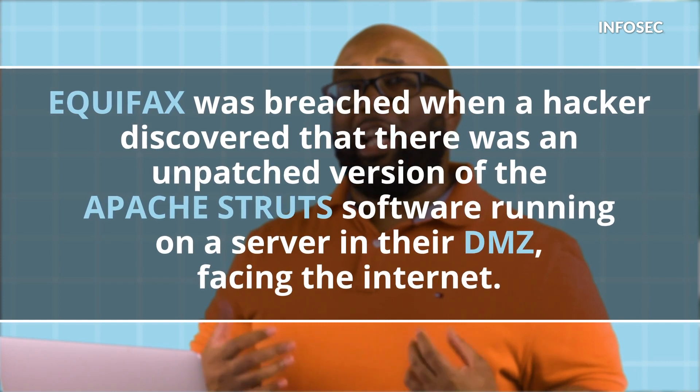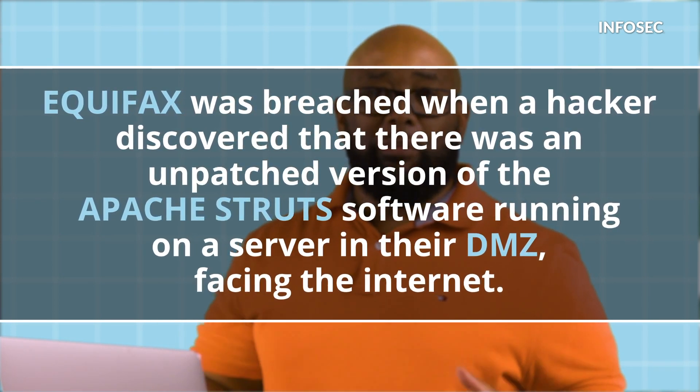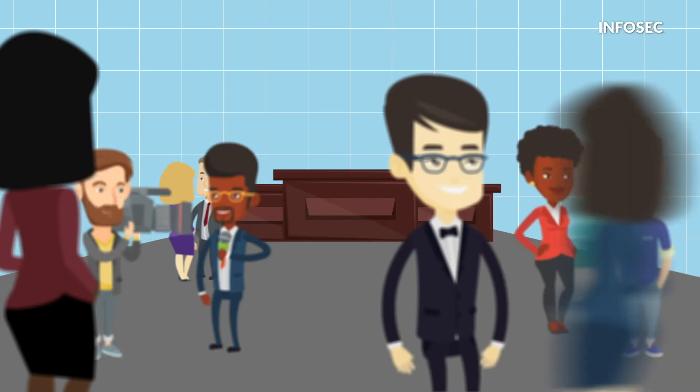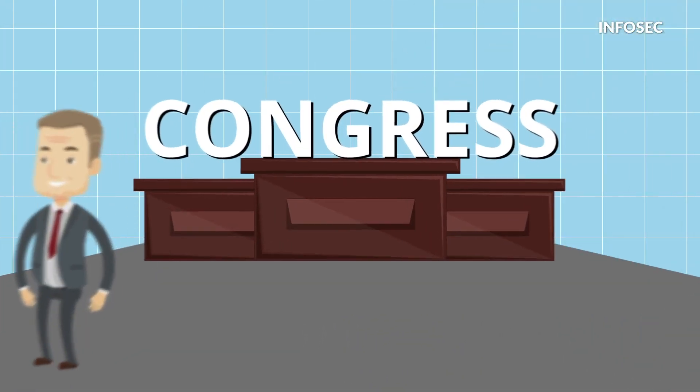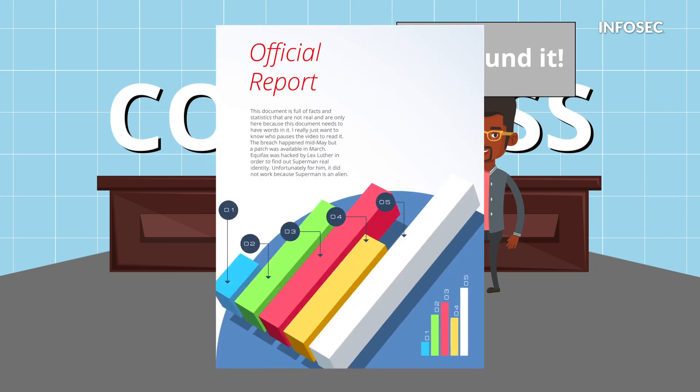Equifax, the largest credit reporting agency and one of the largest human intel databases in the world, was breached when a hacker discovered an unpatched version of Apache Struts software running on a server in their DMZ facing the internet. What makes this significant is that during the congressional hearing that followed, it was revealed that penetration testers had actually found this vulnerability months before. The breach happened mid-May of 2017.